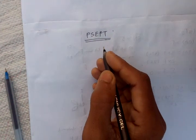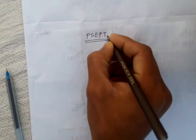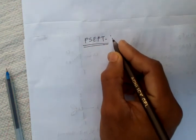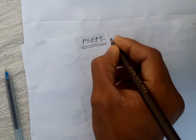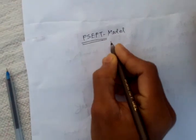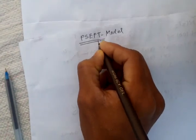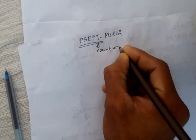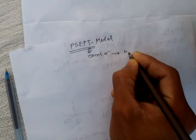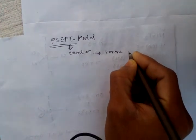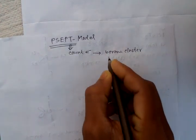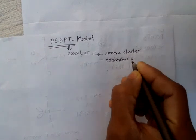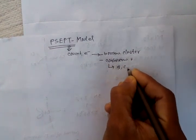Hello friends, today we will discuss the PSEPET model. It basically provides the structure of boron compounds. By using this model, we count electrons to predict the structure of boron clusters as well as carbon clusters — that is, clusters of boron, carbon, and hydrogen.